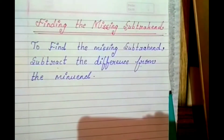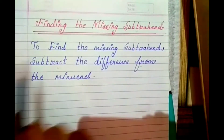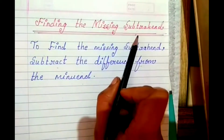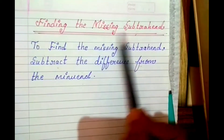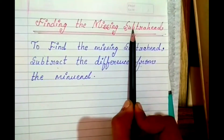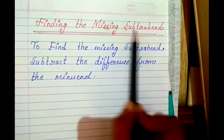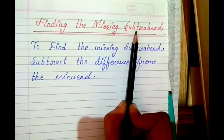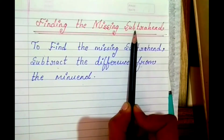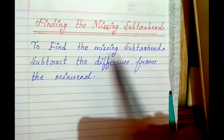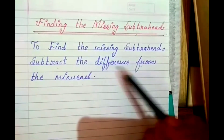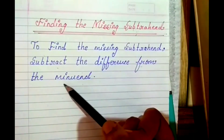Good morning students. Today's topic is finding the missing subtrahend. आज आपका topic क्या है - यदि किसी भी subtraction में subtrahend missing होता है, उसको find करना है। To find the missing subtrahend, subtract the difference from the minuend.